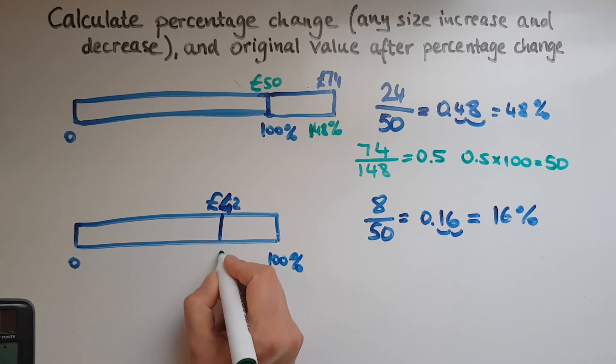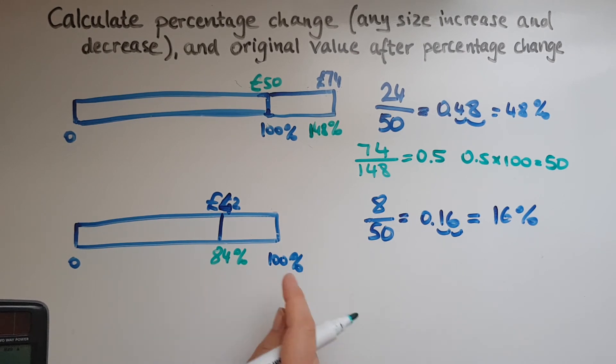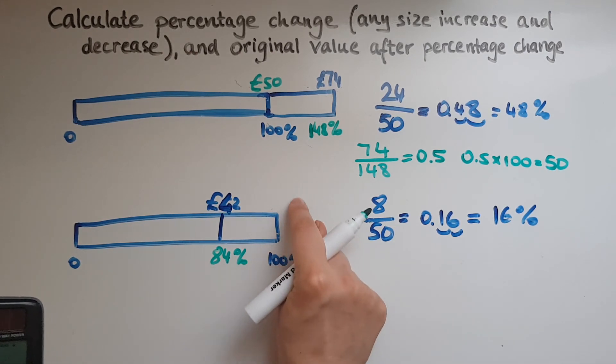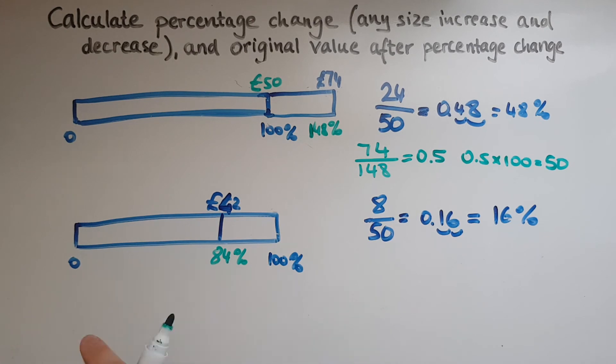We know that there's been a decrease by 16%. So this must be equal to 84% to this point here. 42 must be equal to 84% because we've decreased this by 16%. If you're not given the original value, you'd be given what percentage it's gone by, up or down.